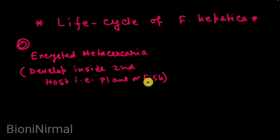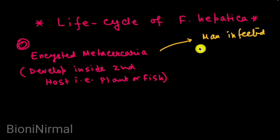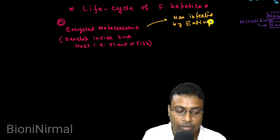If the plant or fish are infected, this is the first development of the plant stage. Humans become infected by eating plants and fish containing metacercaria.